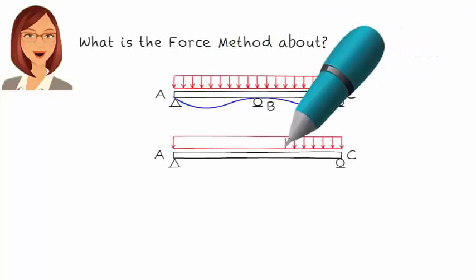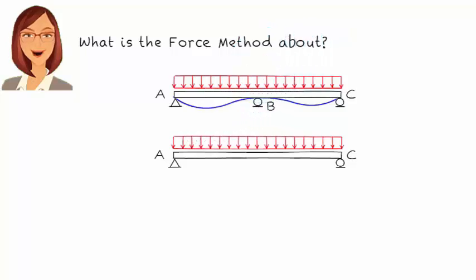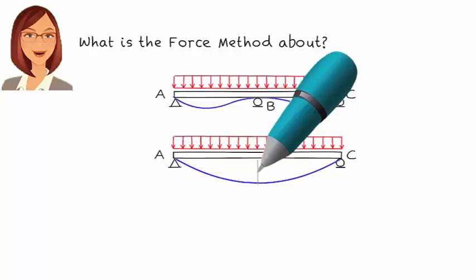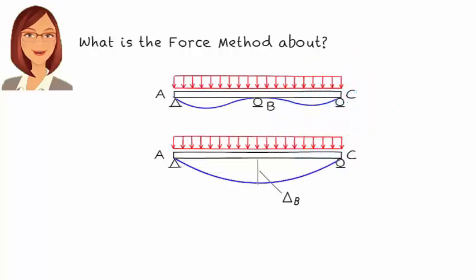Now suppose we remove one of the support reactions, thereby turning the beam into a statically determinate one. Say we remove the roller at B. The deformed shape of the beam is going to look like this. Let's refer to the vertical displacement at B as delta_B. So by removing the support reaction at B, we have allowed the beam to displace downward by delta_B at point B.